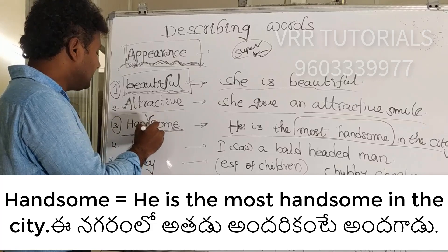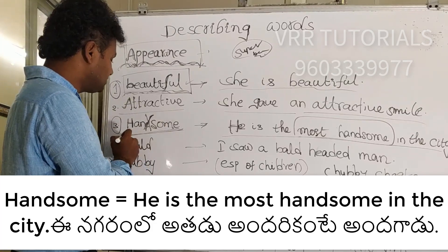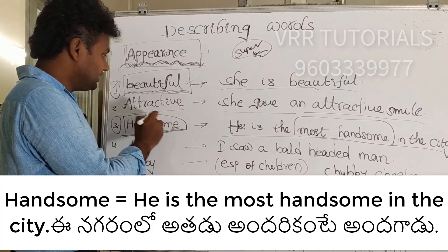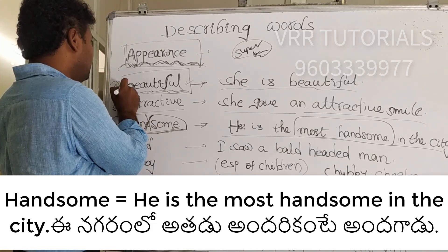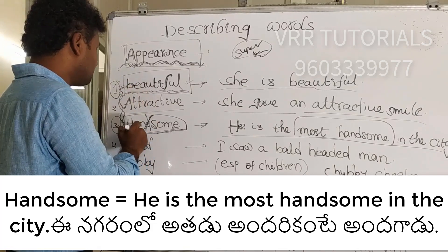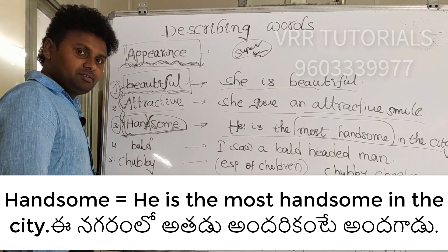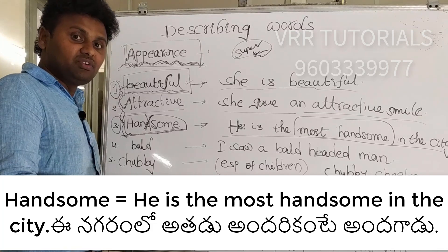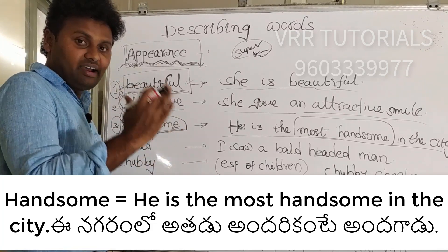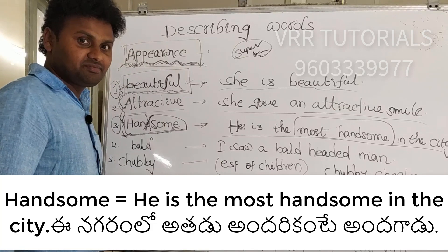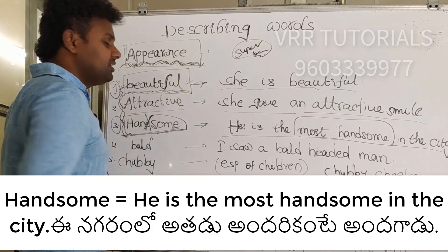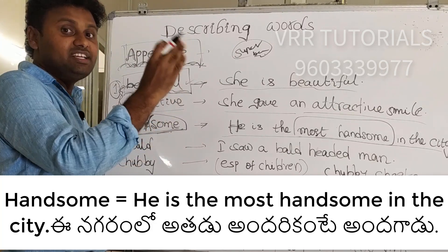Remember: when describing a man's appearance, use 'handsome'. For a girl or a woman, use 'beautiful'. Don't mix these up. For example: 'Raju is a handsome boy' — not 'Raju is beautiful'. And for a girl: 'Rani is beautiful.' Use the right word for the right gender.